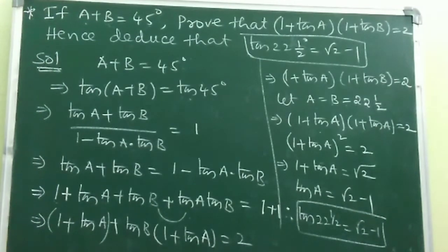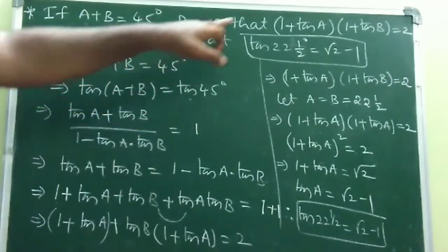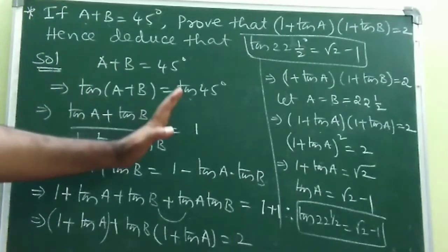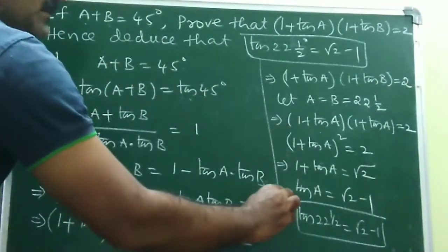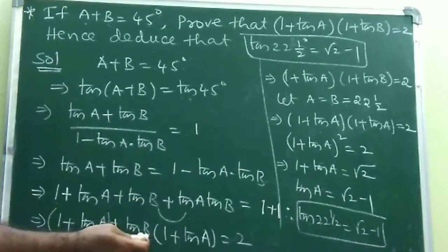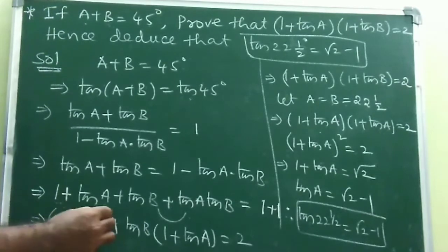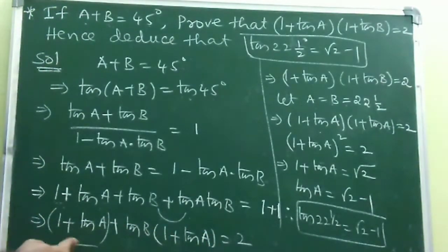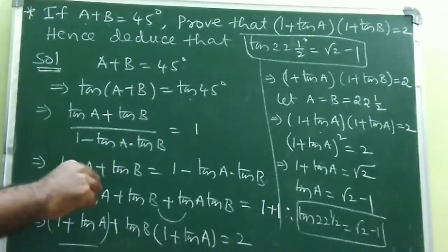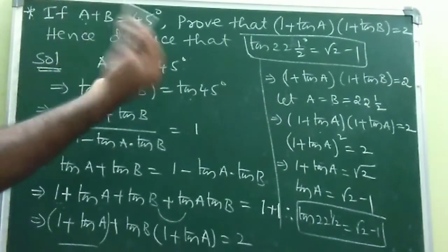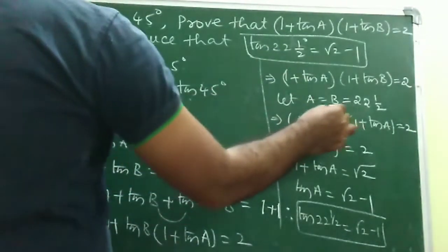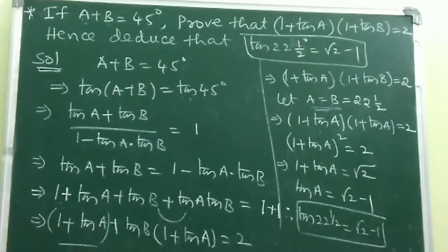Very simple. Step 1: apply tan to A + B = 45°. Step 2: cross-multiply and rearrange to get tan A + tan B + tan A·tan B = 1. Step 3: add 1 to both sides, take tan B common from two terms to get (1+tan A), then take (1+tan A) common overall. For tan 22.5°, set A = B = 22.5°, giving (1+tan A)² = 2, so tan 22.5° = √2 - 1.